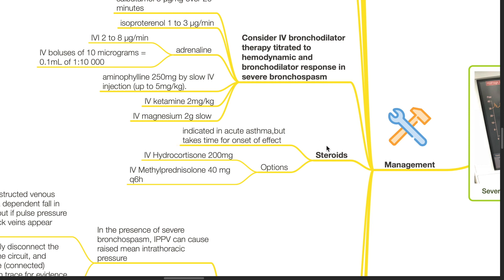Steroids are indicated in acute asthma but take time for onset of effect. Options include IV hydrocortisone 200mg or IV methylprednisolone 40mg 6 hourly.